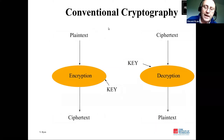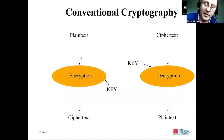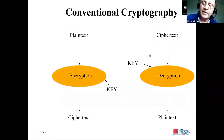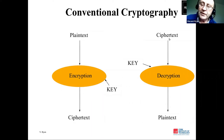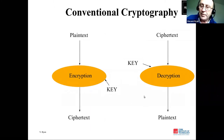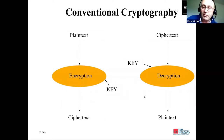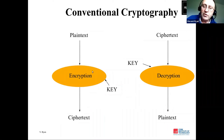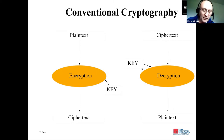Alice is on the left side. She has plain text she wishes to send to Bob securely. She takes the plain text, encrypts it using the key, gets the cipher text, and sends the cipher text to Bob. Bob then takes that cipher text and decrypts it using the key to get the plain text back. While in transit, it's secure — anyone intercepting it just sees unintelligible cipher text. The problem is: how do Alice and Bob share the key? That's the key distribution problem.